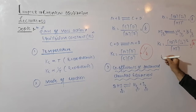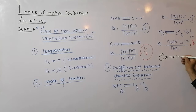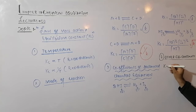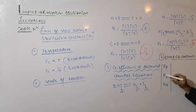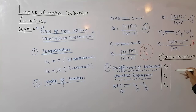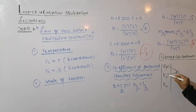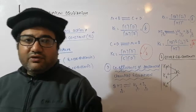The fourth factor is other equilibrium constants. Kc changes if you change Kp, Kx, or Kn. Kp is the equilibrium constant in terms of pressure, Kx is in terms of mole fraction, and Kn is in terms of number of moles. All these equilibrium constants are interrelated; if any one of them changes, the others automatically change. These are the four factors that affect Kc.